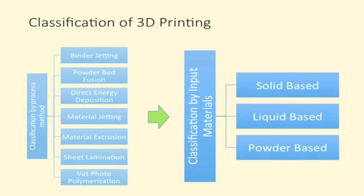Now that we know that 3D printing can print a variety of materials for a variety of applications, it's important to point out that 3D printing actually consists of many different methods. On the left, you can see a classification by ASTM that shows 3D printing can be classified as binder jetting, powder bed fusion, direct energy deposition, and so forth. However, for ordinary people, a classification by materials — whether the input is solid, liquid, or powder — is a simpler method of classification.